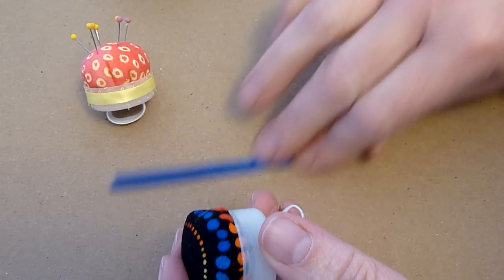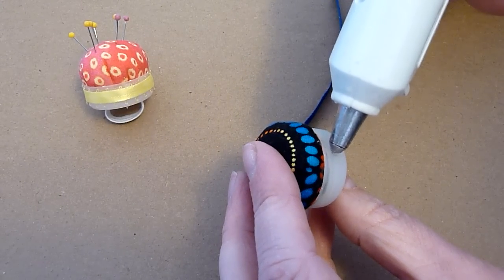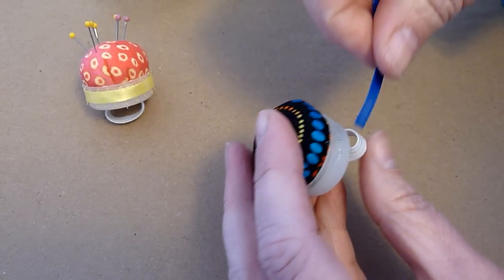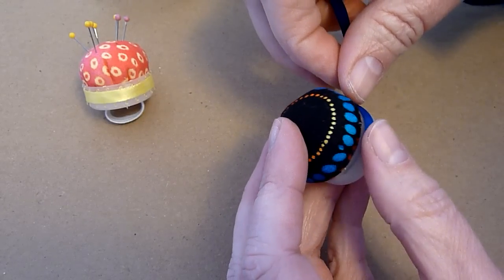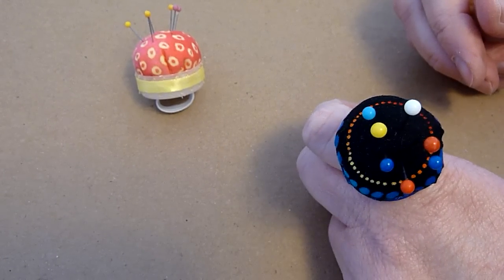Next step, we're going to take our ribbon. We're going to glue that around the outside here. There you go. You're all set with your finger pincushion.